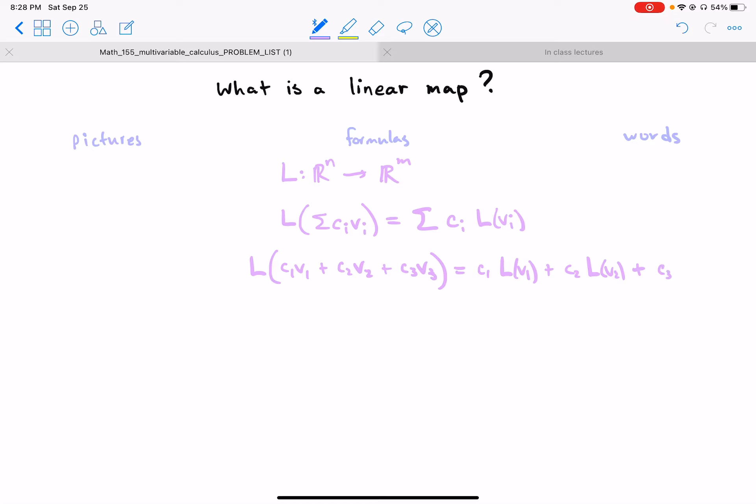C3 times L of V3. So this property is very special and it's called linear. And now what are these things? I have to tell you actually where the Ci are real numbers and the Vi are vectors in